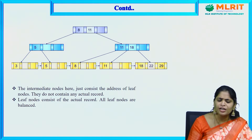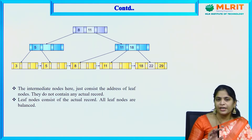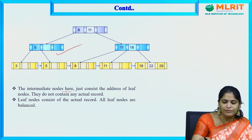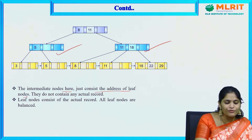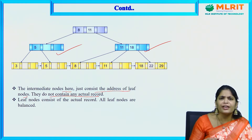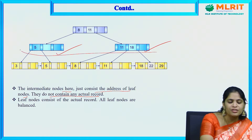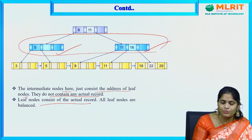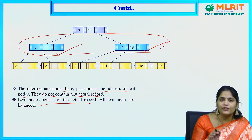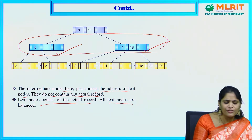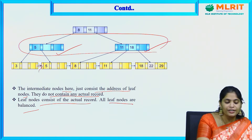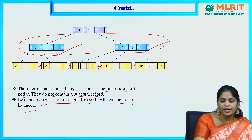In this manner we keep data in a sorted manner. The intermediate nodes just consist of addresses of leaf nodes — they do not contain any actual record. Leaf nodes consist of the actual records. All leaf nodes are balanced and they are connected with each other using a single linked list.